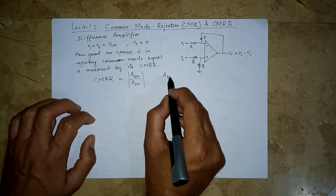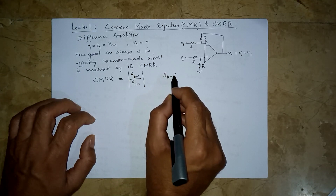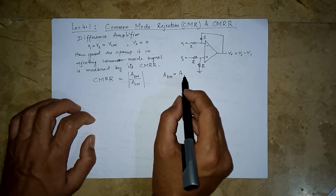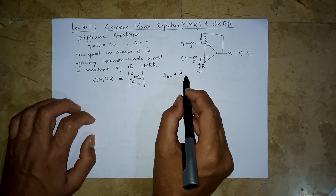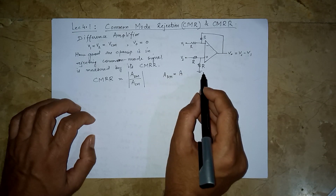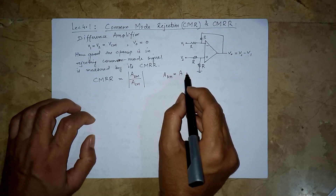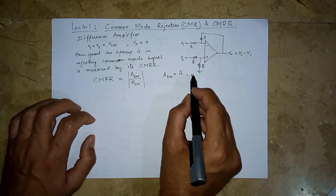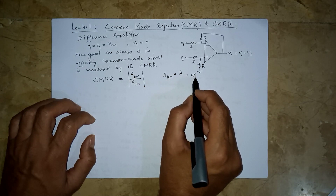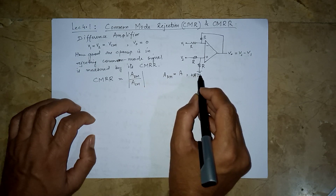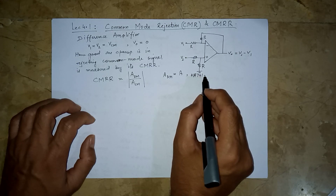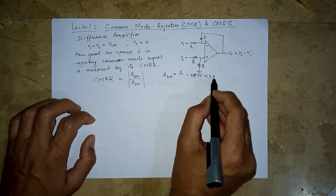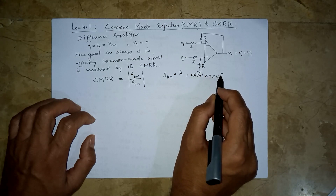This Adm is actually the same gain A that we already know — the open-loop voltage gain, which is typically infinity or very high. For example, for a µA741 op-amp, it is like 2×10^5.